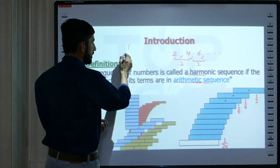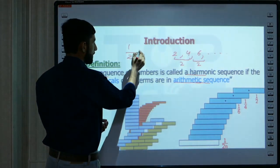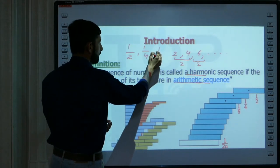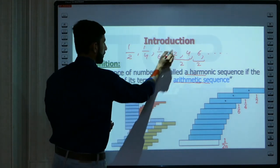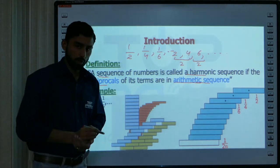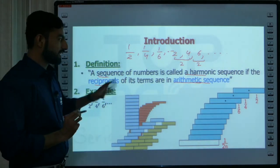So if this is arithmetic progression, then the harmonic sequence will be 1 over 2, 1 over 4, and 1 over 6, and so on. This will be harmonic progression, simply taking the reciprocals of arithmetic sequence.